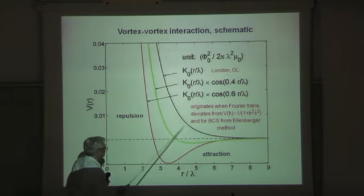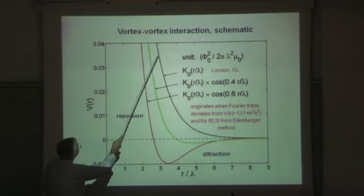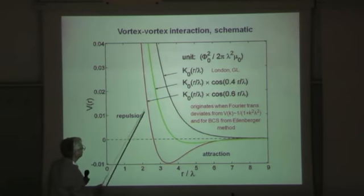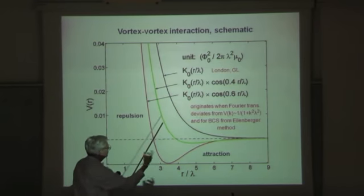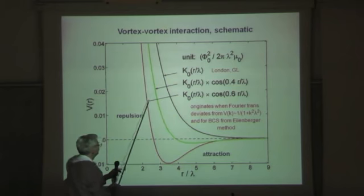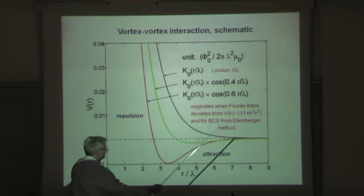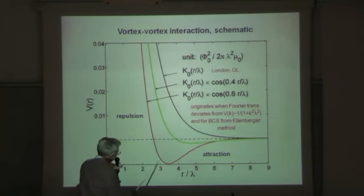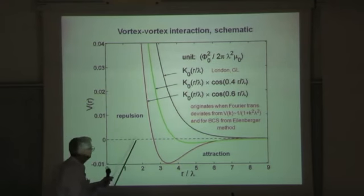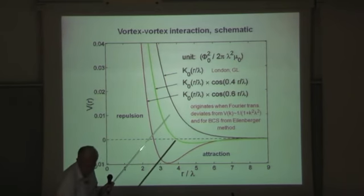The usual London theory and Ginzburg-Landau theory give you a purely repulsive potential. This is the interaction potential between two vortices. But when you add correction terms from the BCS theory, from microscopic theory, then the potential can have a minimum, and this means it has an attractive tail. At long distances vortices can be attracted, and then they approach until the potential is minimum. This was known quite long ago and was confirmed by theory.